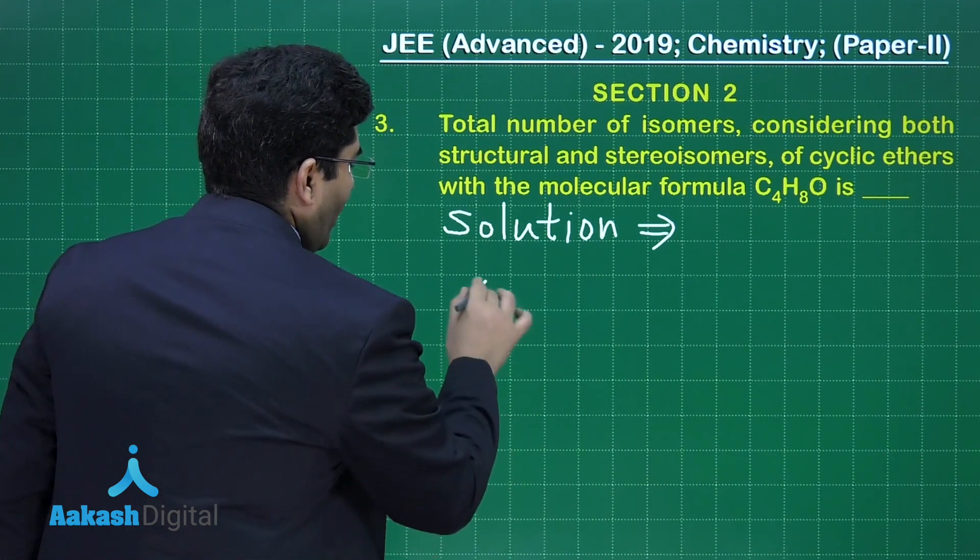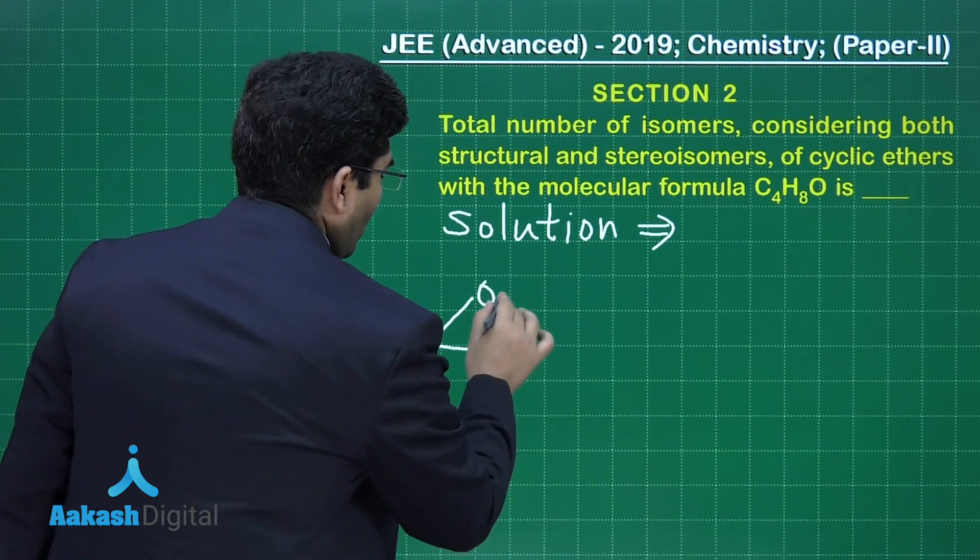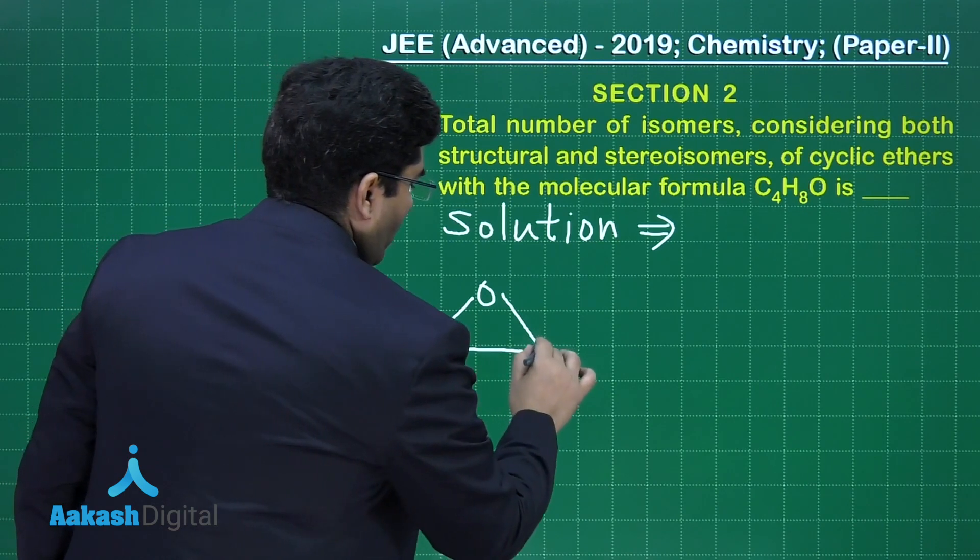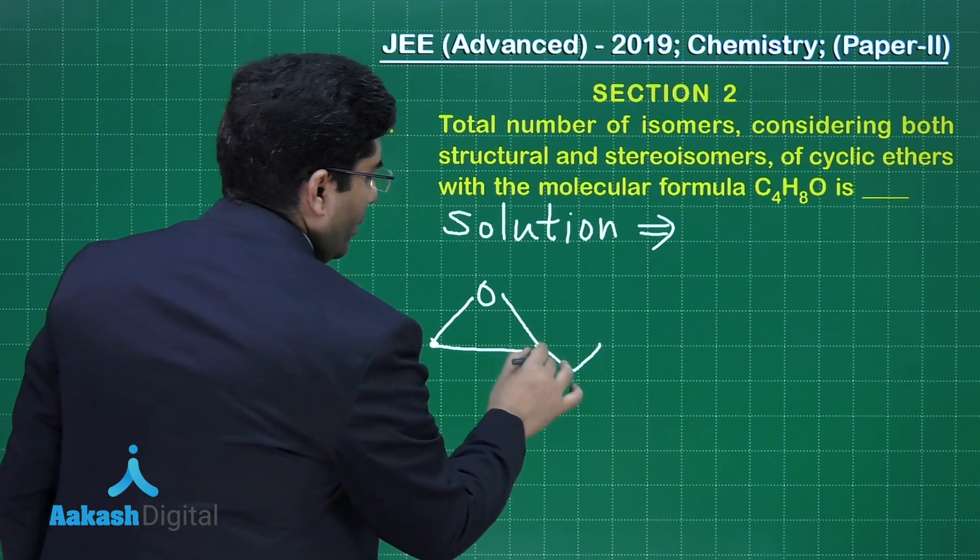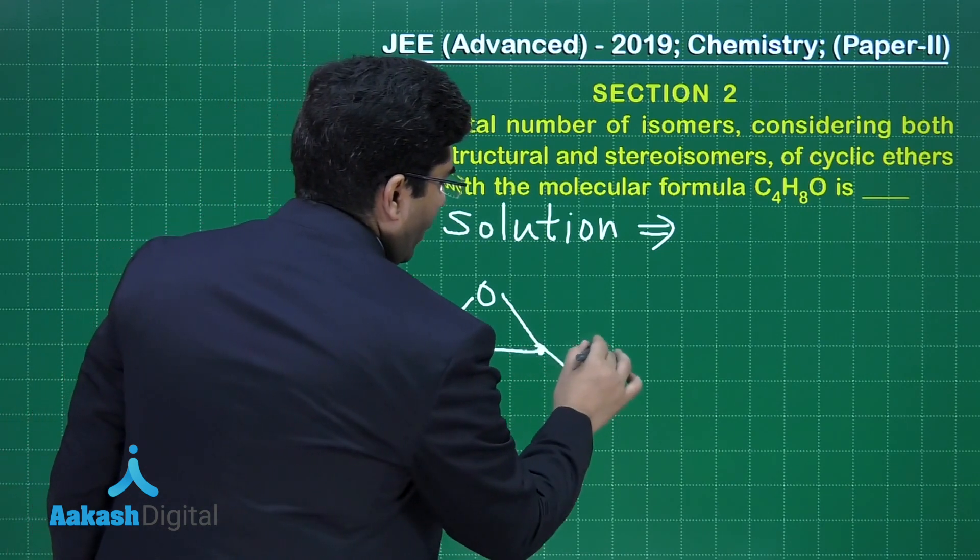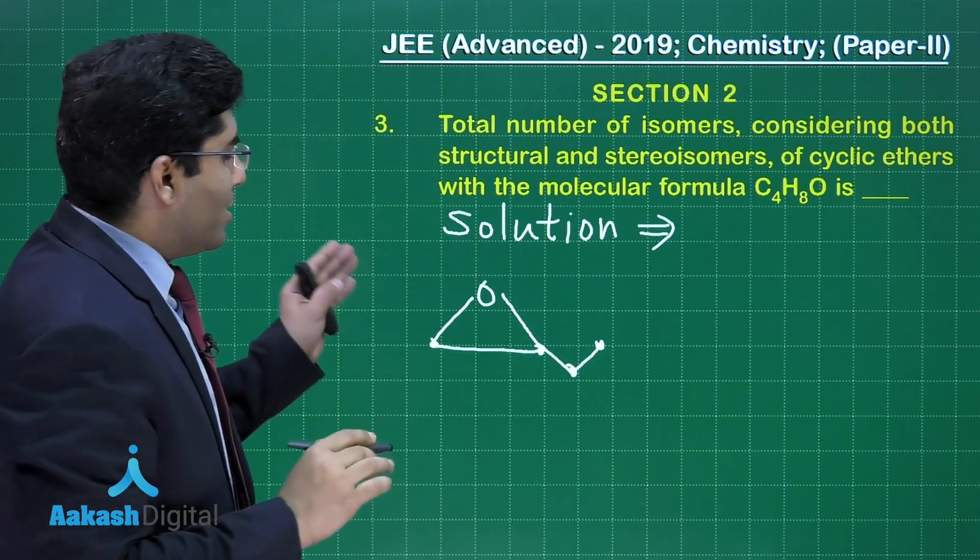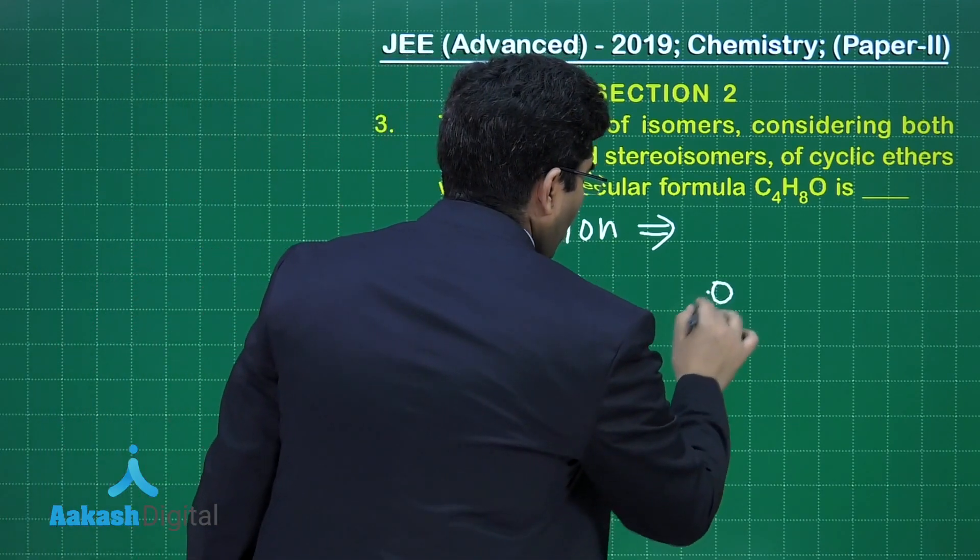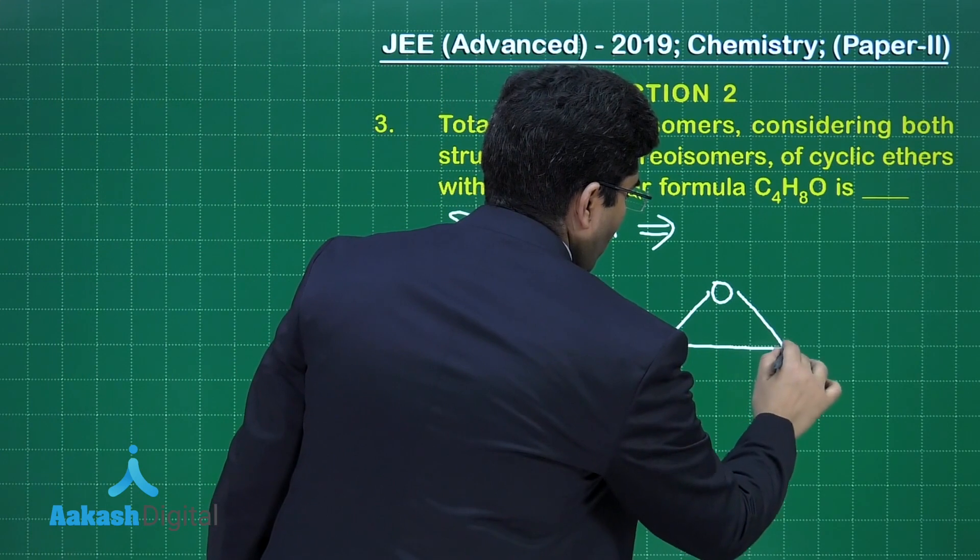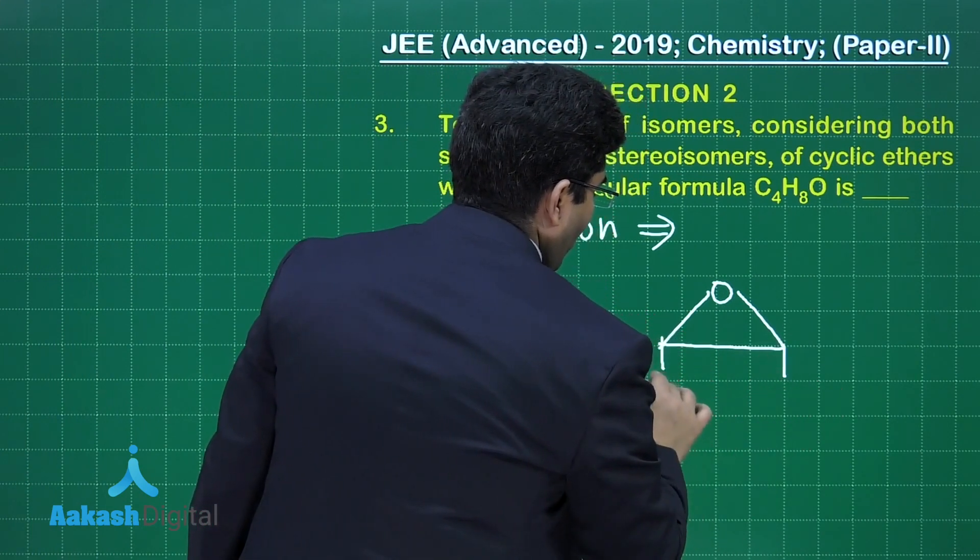The possible options will be: let us start with this. So, one carbon, second carbon, third carbon, fourth carbon. So, this is the first option. Second option is,